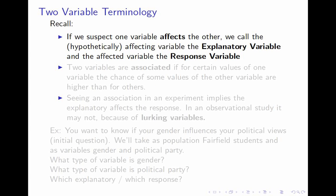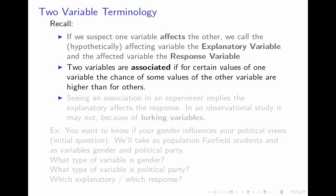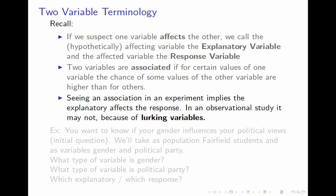If we are interested in whether one variable affects another, we call the variable that we are considering might do the effecting the explanatory variable, and the one we think might be affected the response variable. Two variables are associated if, for certain values of one of the variables, the chances of the other variable are higher. Roughly speaking, knowing the value of one variable gives you some information about the value of the other.